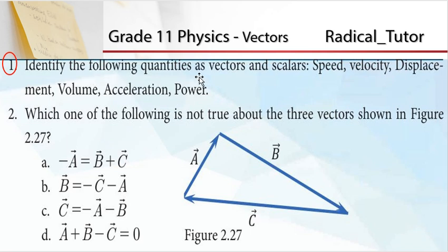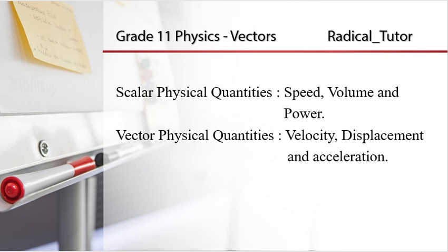Question number 1: Identify the following quantities as vectors and scalars - speed, velocity, displacement, volume, acceleration, and power. Physical quantities are either scalar or vector. It's simple: speed, volume, and power are scalar physical quantities. Velocity, displacement, and acceleration are vector physical quantities.